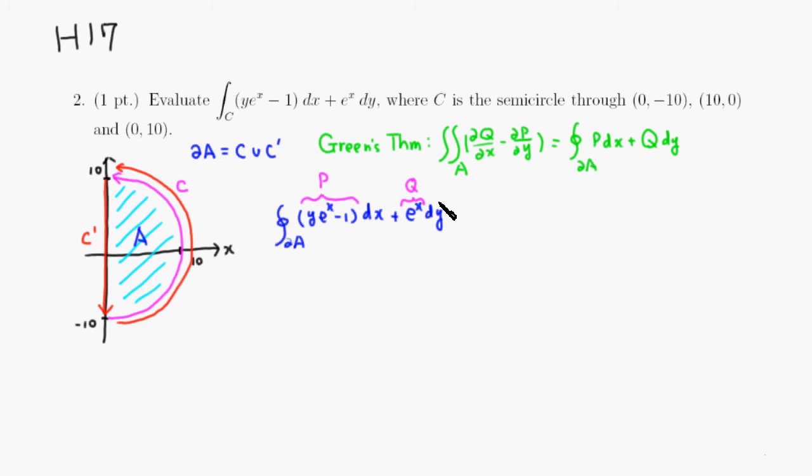By following Green's theorem, so this is going to be a double integral over the region A, so that's the half disk. And let's see, partial derivative of Q with respect to x is e to the x minus partial derivative of P with respect to y would be e to the x too.